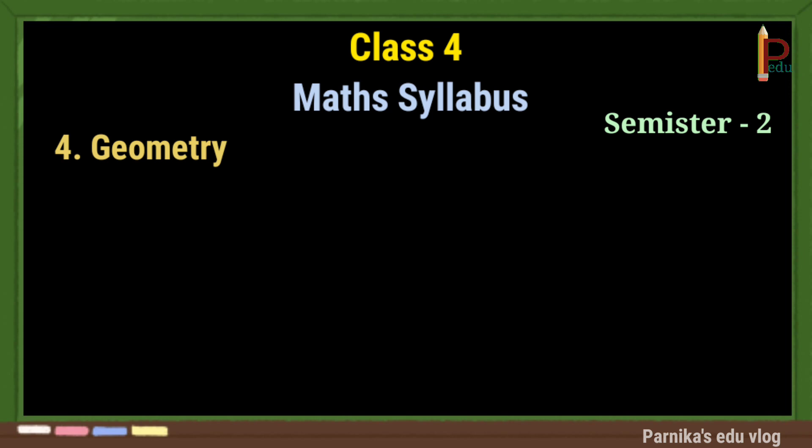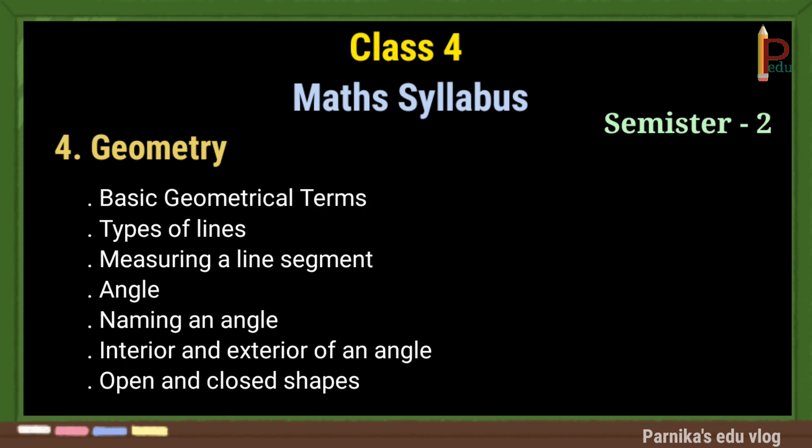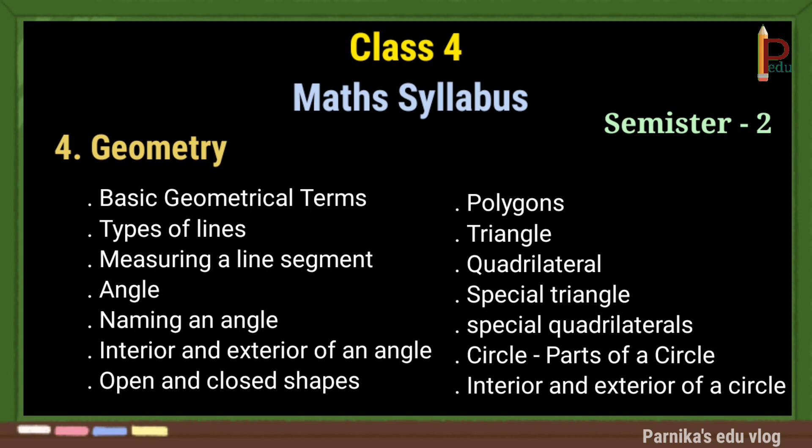The fourth chapter is Geometry. This is also an extension of the third class geometry chapter. Extra topics here include angles, polygons, and quadrilaterals.